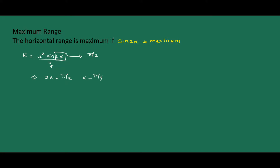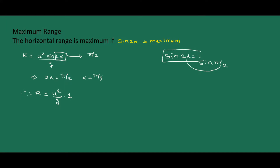So if you throw a particle from the point of projection at angle 45 degrees, then the particle reaches the maximum range. Therefore, since sin 2α equals 1 at α equals π/4, the maximum range R equals U squared divided by G into sin 2α, where sin 2α equals 1. Therefore R equals U squared divided by G, which is the maximum range.